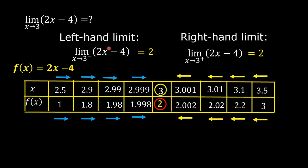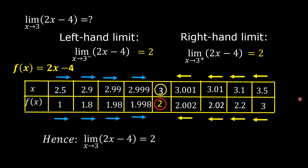We can see that the left-hand limit is equal to the right-hand limit. If the left-hand limit is equal to the right-hand limit, then the limit of the function exists, and our estimate is 2. Therefore, the limit of the quantity 2x minus 4 as x approaches 3 is equal to 2. Note there is no positive or negative sign above and to the right of 3.